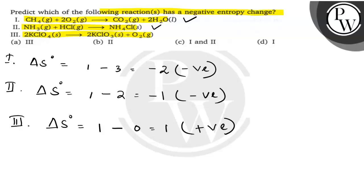Reactions 1 and 2 are having negative entropy, so the correct answer will be option C. Thank you.